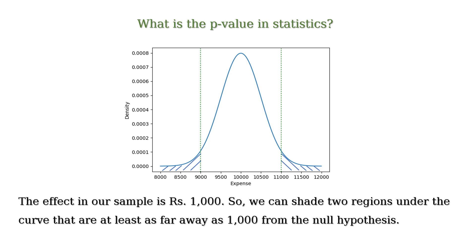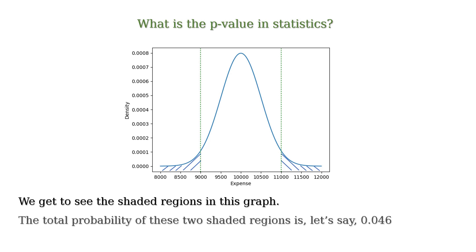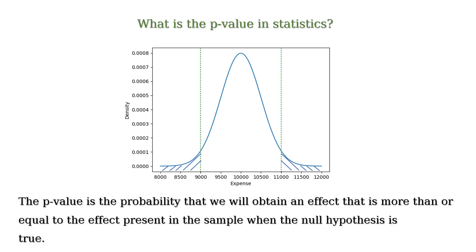We can see the shaded regions in the graph — note the difference between this graph and the earlier graph. The total probability of these two shaded regions is, let's say, 0.046, and that is the p-value. In other words, the p-value is the probability that we will obtain an effect that is greater than or equal to the effect present in the sample when the null hypothesis is true.